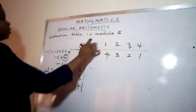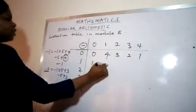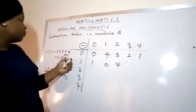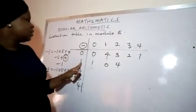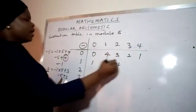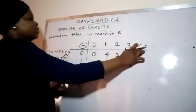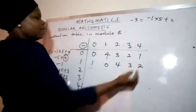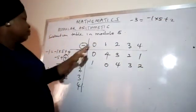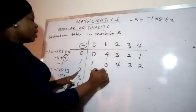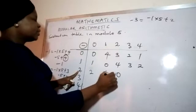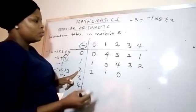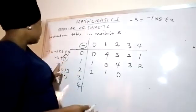So: this minus this is 1, this minus this is 0, this minus this is minus 1, giving 4. This minus this is minus 2, giving 3. This minus this is minus 3 — using minus 1 times 5 plus 2 — giving 2. Now, 2 minus 0 is 2, 2 minus 1 is 1, 2 minus 2 is 0, and 2 minus 3 is minus 1, whose positive equivalent is 4.